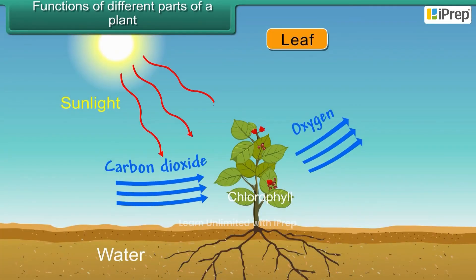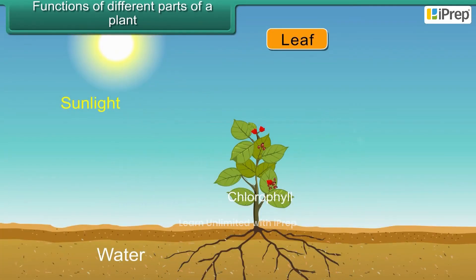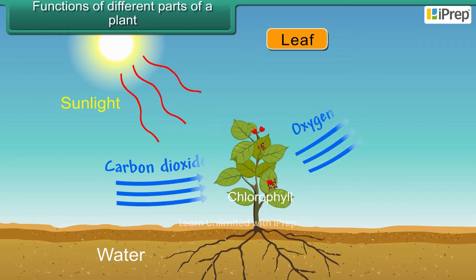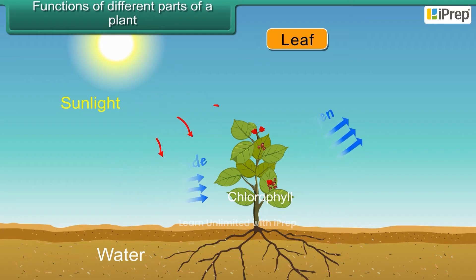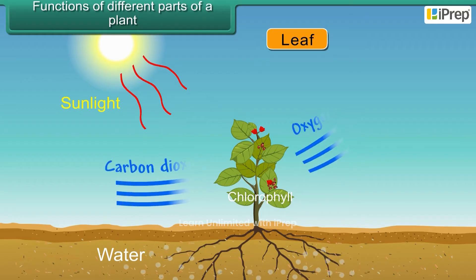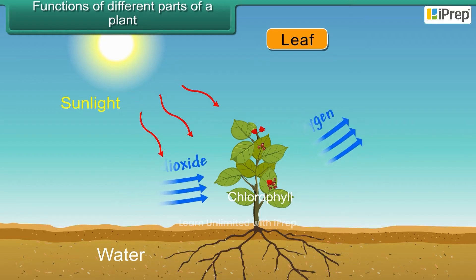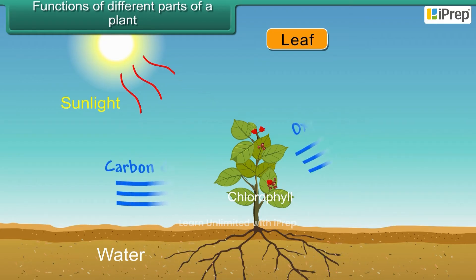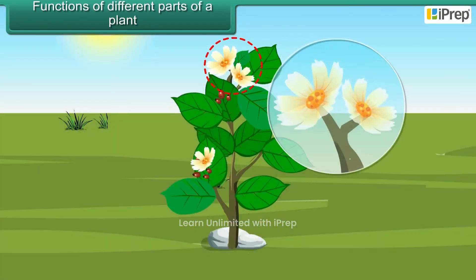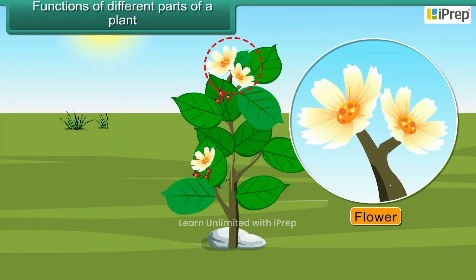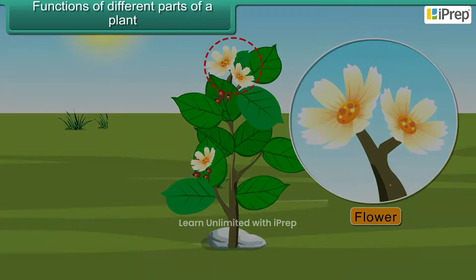The leaves use chlorophyll and sunlight to change carbon dioxide and water into sugar. Leaves also give out oxygen and water. The flower produces seeds and is the reproductive part of a plant.